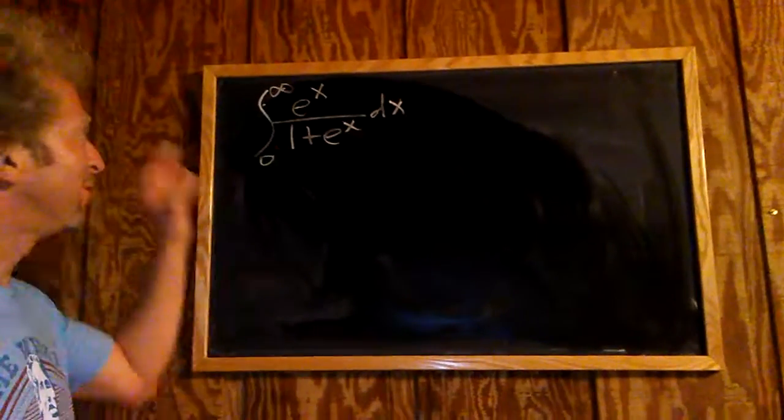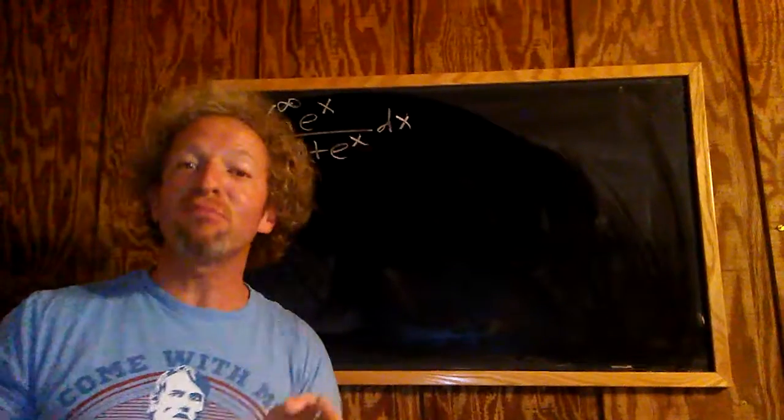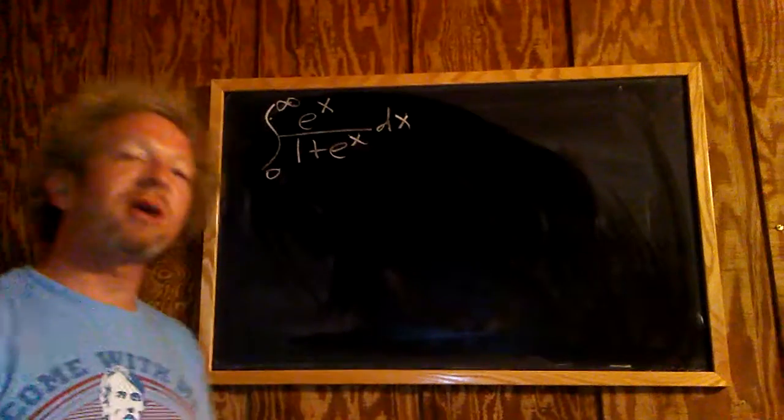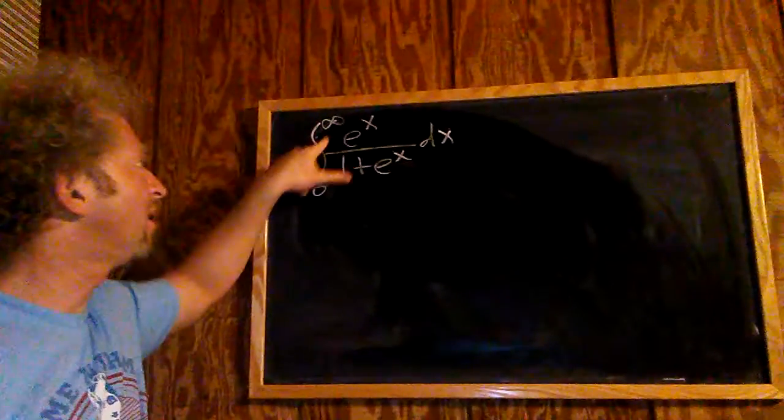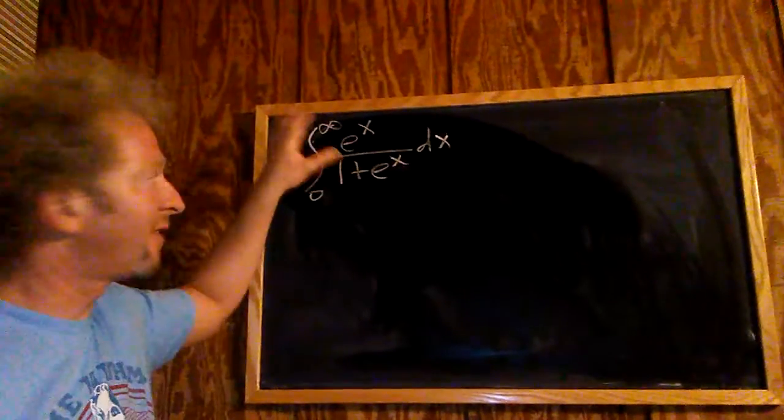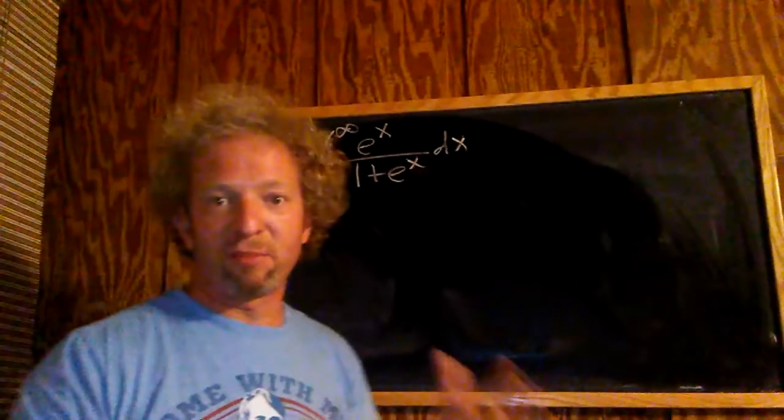In this video, we're going to integrate. What we have here is an improper integral. The reason it's an improper integral is because we have an infinity symbol here. So if you have an infinity symbol here, or a negative infinity symbol here, or vice versa, it's called an improper integral.